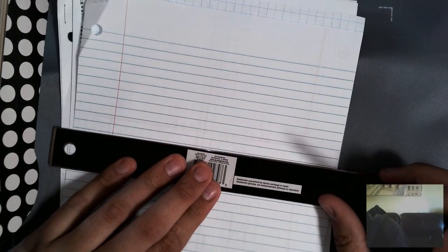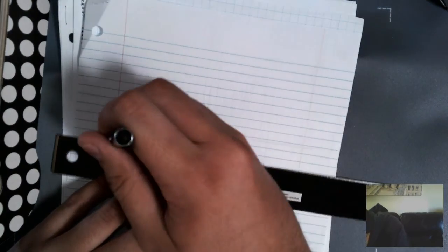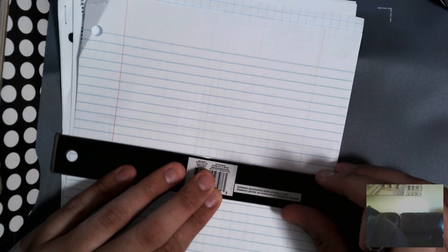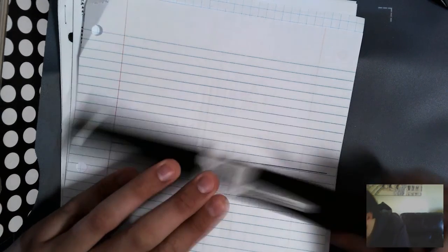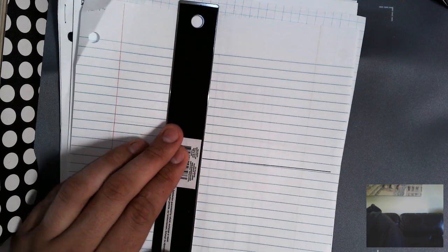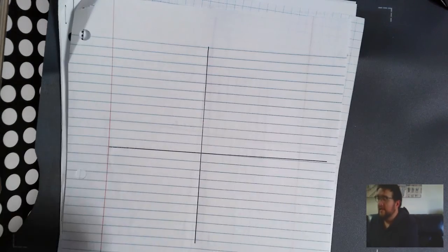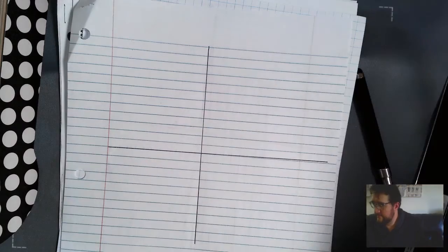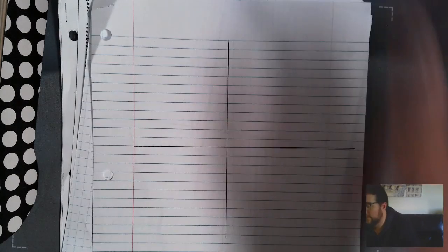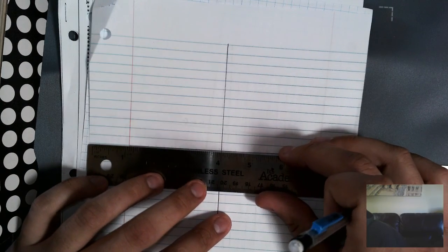So what you'll want to do, as crazy as it sounds, take your ruler, find about the middle of the page. Maybe grab a nice dark pen or pencil. And make that really, really, really dark. And then try to do a perfectly straight one going the opposite direction. Yeah, that's about perfectly straight.